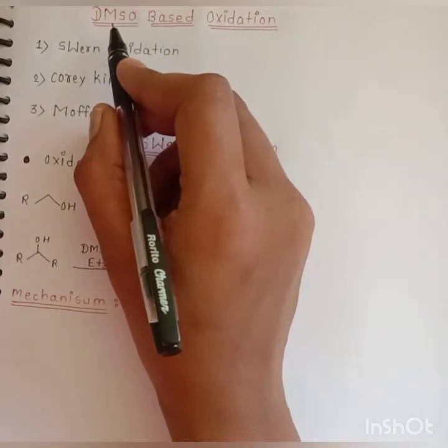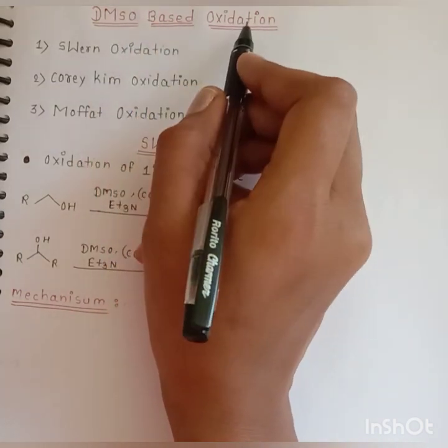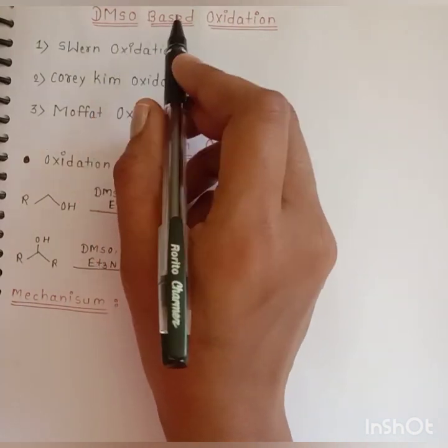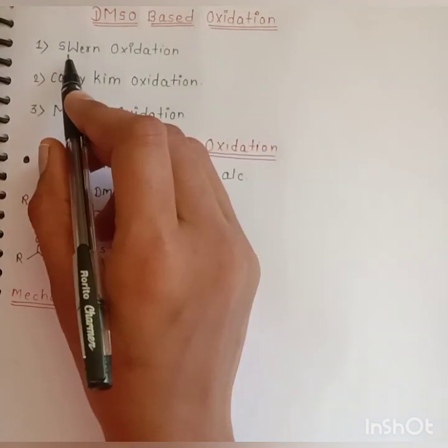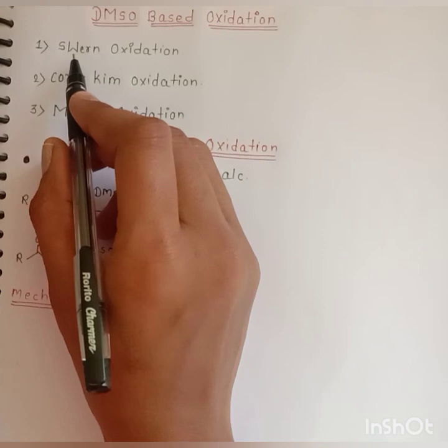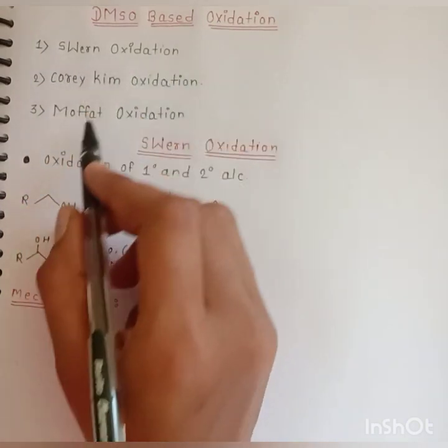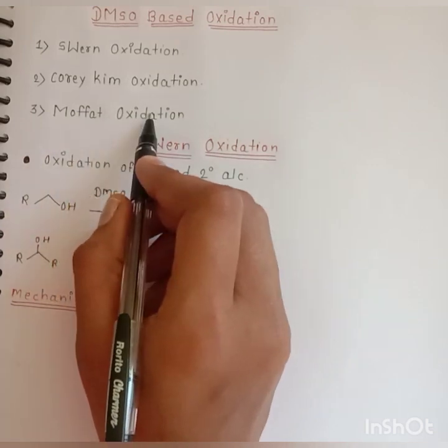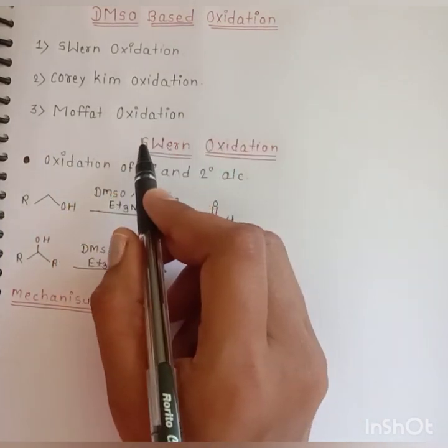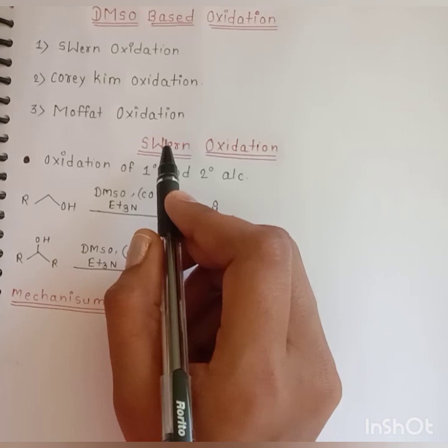DMSO based oxidation is of three types: first is the Swern oxidation, second is the Corey-Kim oxidation, third is the Moffatt oxidation. In this video I am going to specially talk about the Swern oxidation.